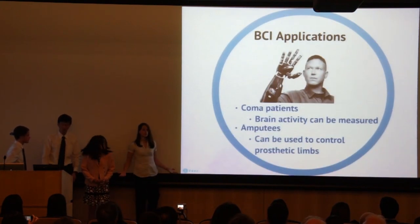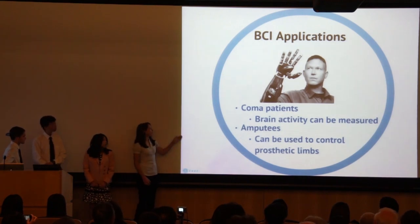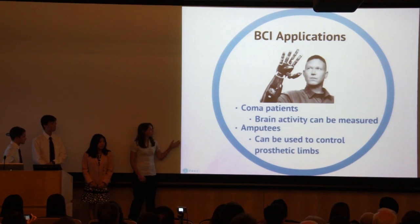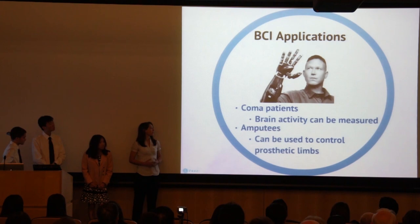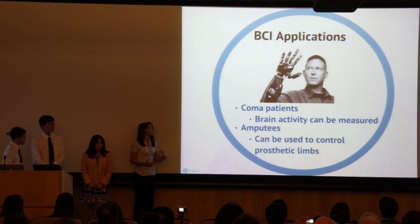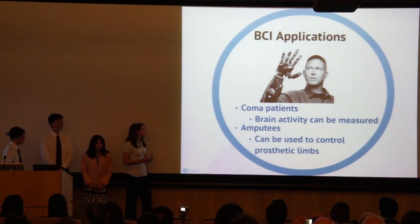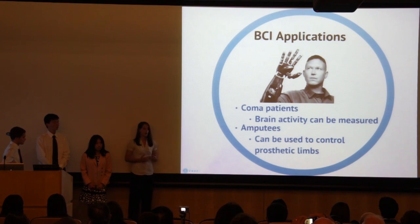EEG is cool new technology, but what can it actually be used for in real life? Two main applications are coma patients and amputees. Right now, EEG is serving as the first truly viable form of communication between coma patients and the outside world, because before this it was very hard to communicate. But now they can answer questions and people can tell what they're thinking. It also serves as a test to determine whether a coma patient is brain dead or not.